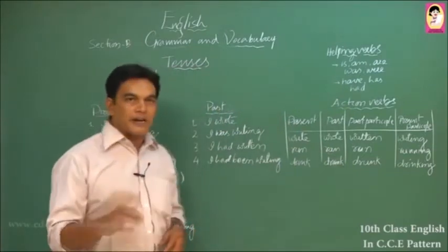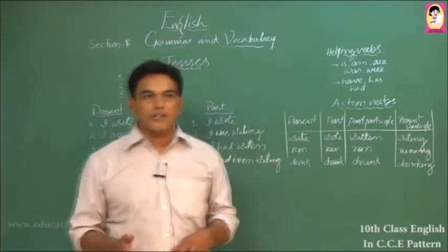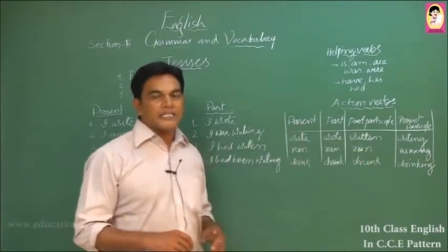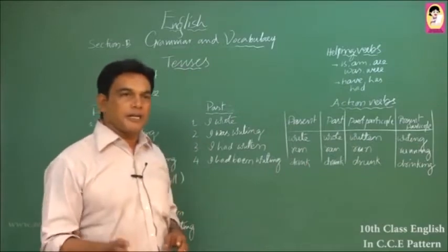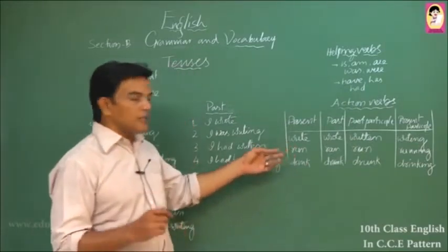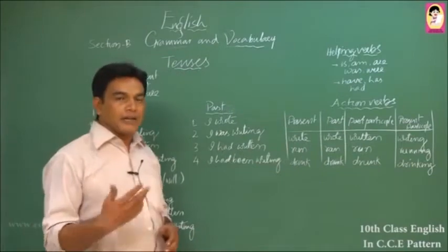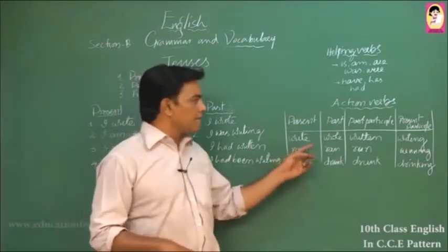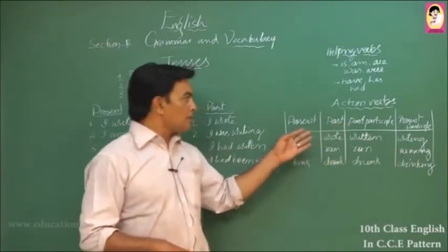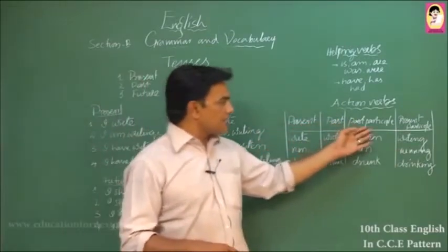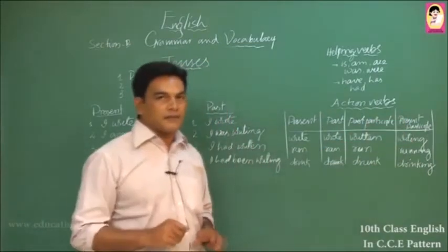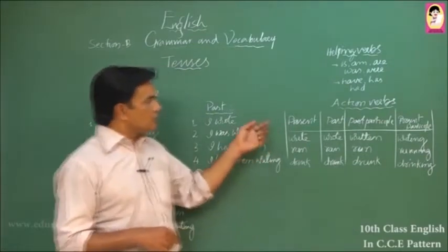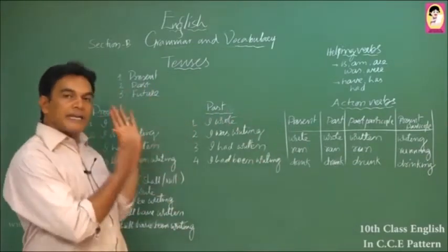Every action verb has four forms. They are named: present (V1), past (V2), past participle (V3), and present participle (V4). Whenever you come across a new action verb in the dictionary, always find out all four forms, because that will help you form the tense of a sentence.